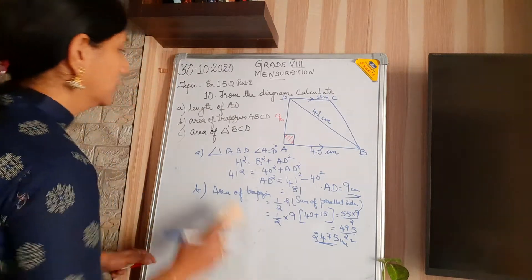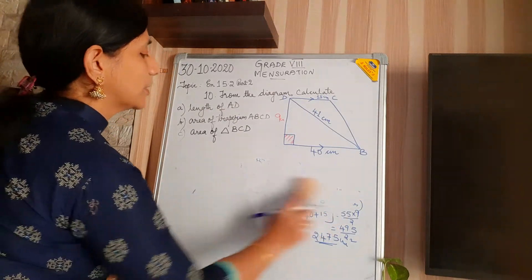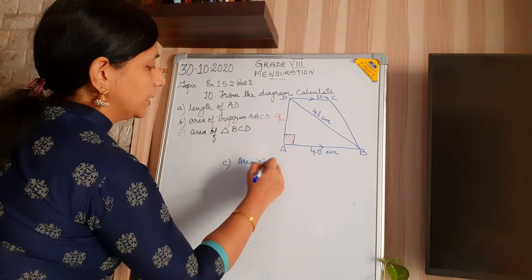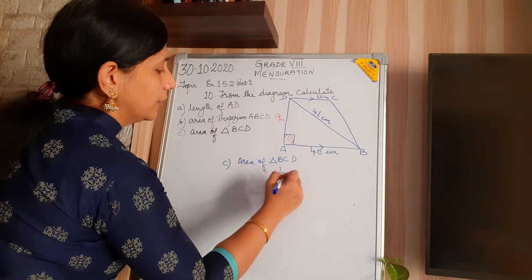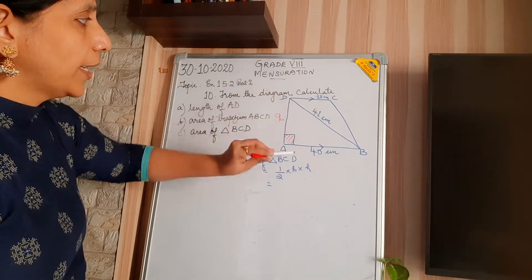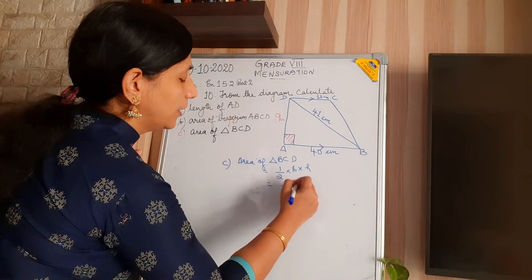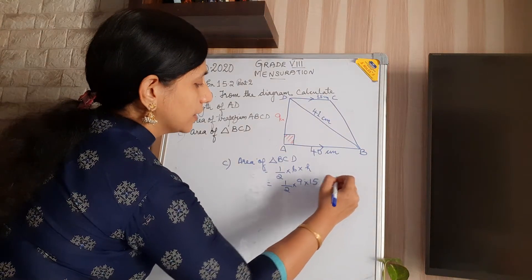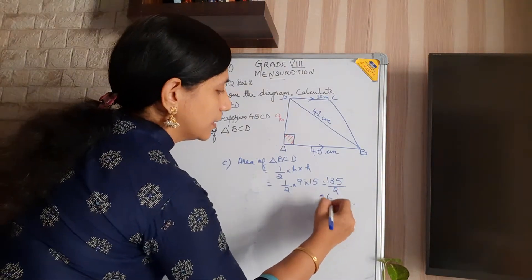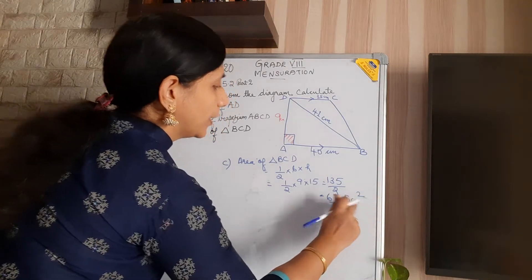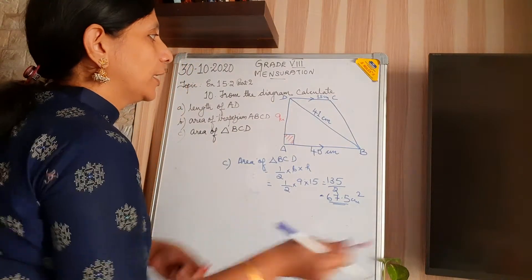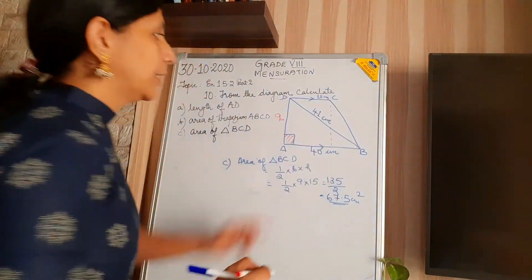Now the next part, part C: area of triangle BCD. Area of triangle BCD is half × base × height. The base can be 15 and the height is the same — the perpendicular distance — which is 9 centimetres. So half × 9 × 15 = 67.5 centimetres square. The height is the same because the perpendicular distance is the same, 9 centimetres.